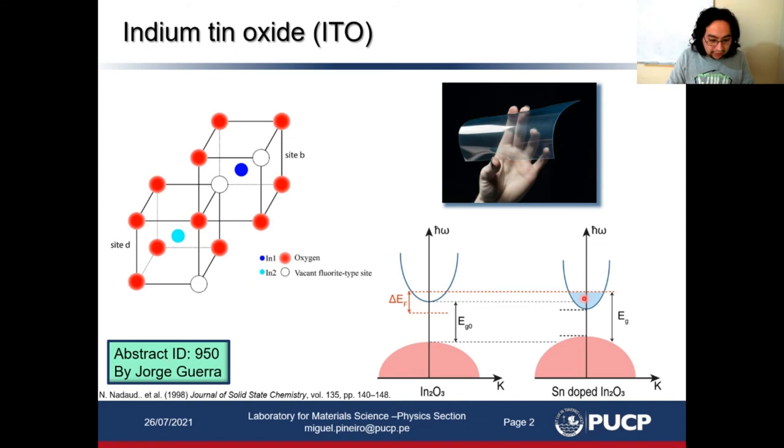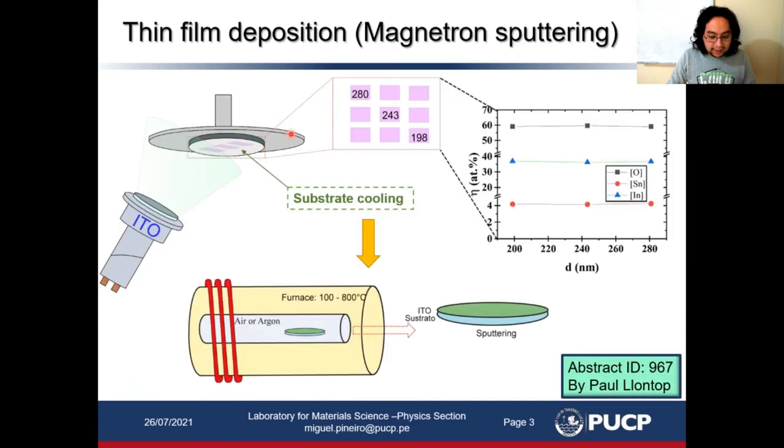Because of this, we prepare ITO layers at low substrate temperature to induce inhomogeneous microstructure and tune the optical and electrical properties. We fabricate these materials by radiofrequency magnetron sputtering with substrate cooling active during deposition without rotating, in order to have various samples with different thickness. Using EDS spectroscopy, we obtain the elemental composition, and we can see in this figure that the elemental composition doesn't change with increasing thickness.